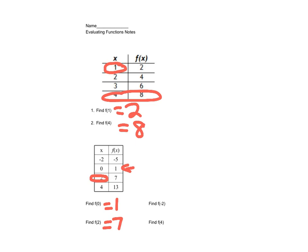f at negative 2, negative 5. f at 4 is 13. So once again, we're looking at x and determining y.